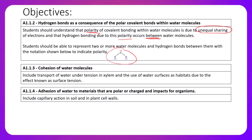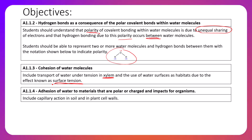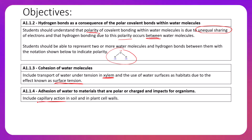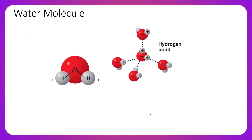A1.1.3 is the cohesion of water molecules, specifically including transport of water under tension in xylem and the use of water surfaces as habitats due to surface tension. We'll cover xylem and the flow of water molecules through xylem vessels and talk in detail about surface tension. A1.1.4 is adhesion of water to materials that are polar or charged, and impacts for organisms, including capillary action in soil and in plant cell walls.